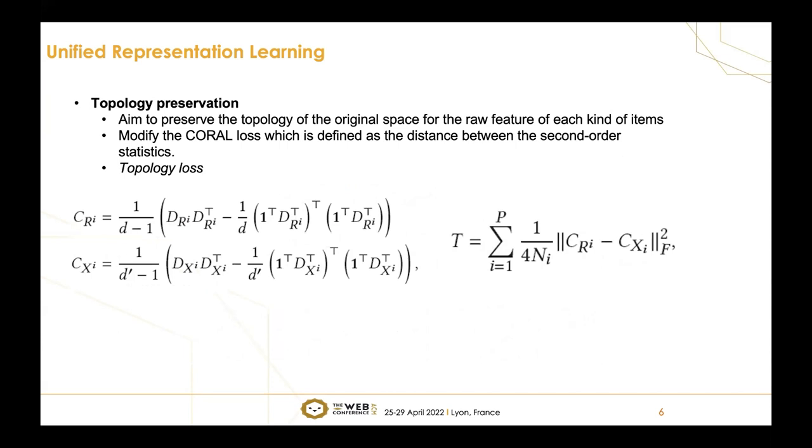Secondly, we want to preserve the topology of the original space for the raw features of each kind of items. So we propose the topology loss. We modify the Coral loss, which is a loss used widely in CV problems. It is defined as the distance between the second-order statistics.